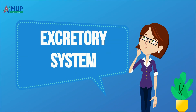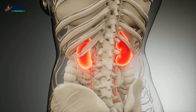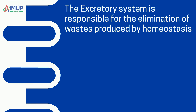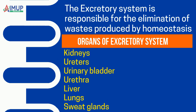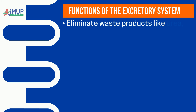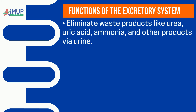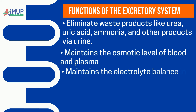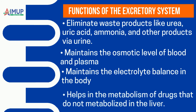The excretory system is responsible for the elimination of wastes produced by homeostasis. Functions include eliminating waste products like urea, uric acid, ammonia, and other products via urine; maintaining the osmotic level of blood and plasma; maintaining electrolyte balance in the body; and helping in the metabolism of drugs that are not metabolized in the liver.